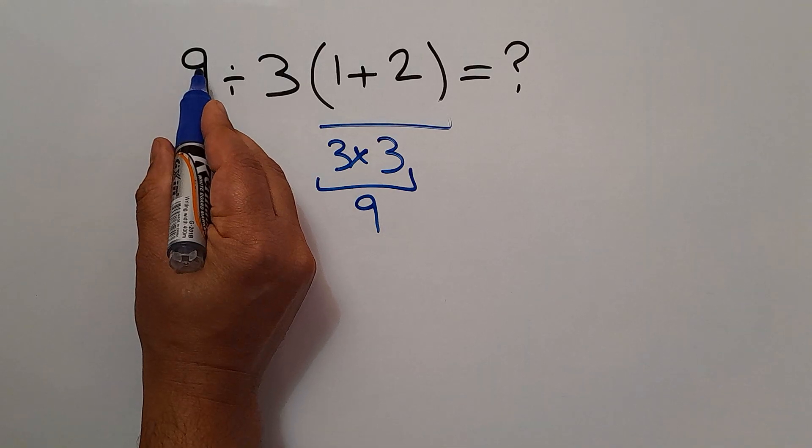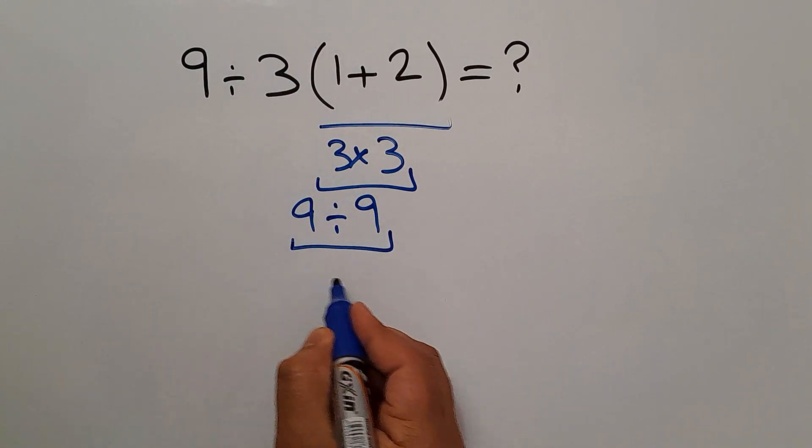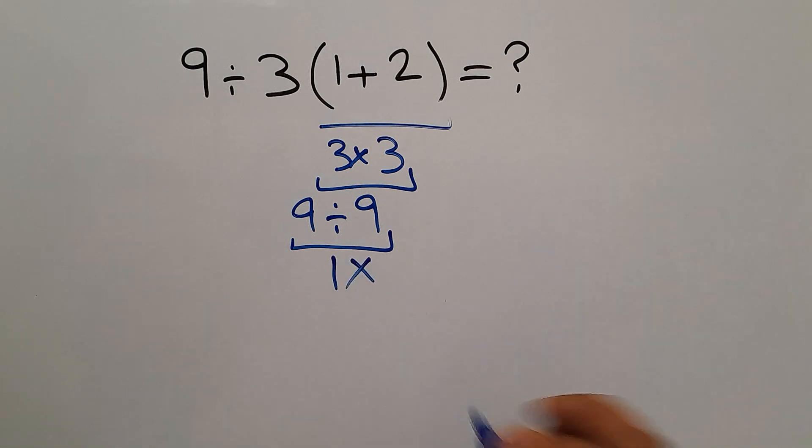We have here 9 divided by this. So, 9 divided by 9, which equals 1. But this answer is not correct.